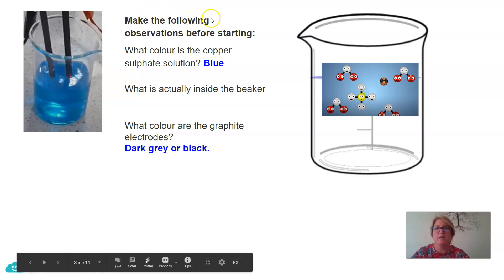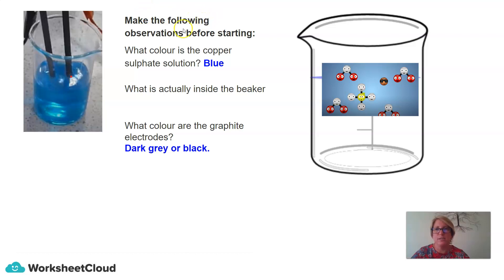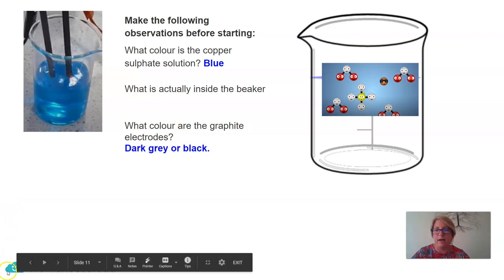I asked you to make the following observations before starting. What color is the copper sulfate solution? And if we have a look in the diagram here, it's blue. What is actually inside the beaker? Well, inside the solution, we obviously have water and we have copper sulfate. And what color are the graphite electrodes? They were a dark gray or black color.